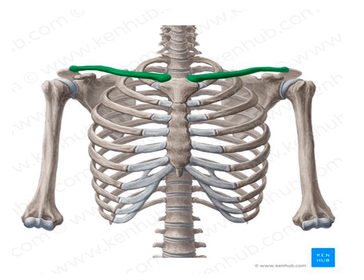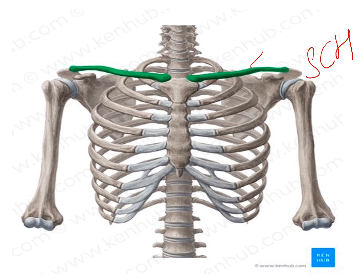First we will discuss the origin of pectoralis major muscle. This muscle has two heads. Fibers arising from the clavicle are called the clavicular head, and fibers arising from the sternum and costal cartilages are called the sternocostal head. The clavicular head arises from the anterior surface of the medial two-thirds of the clavicle.